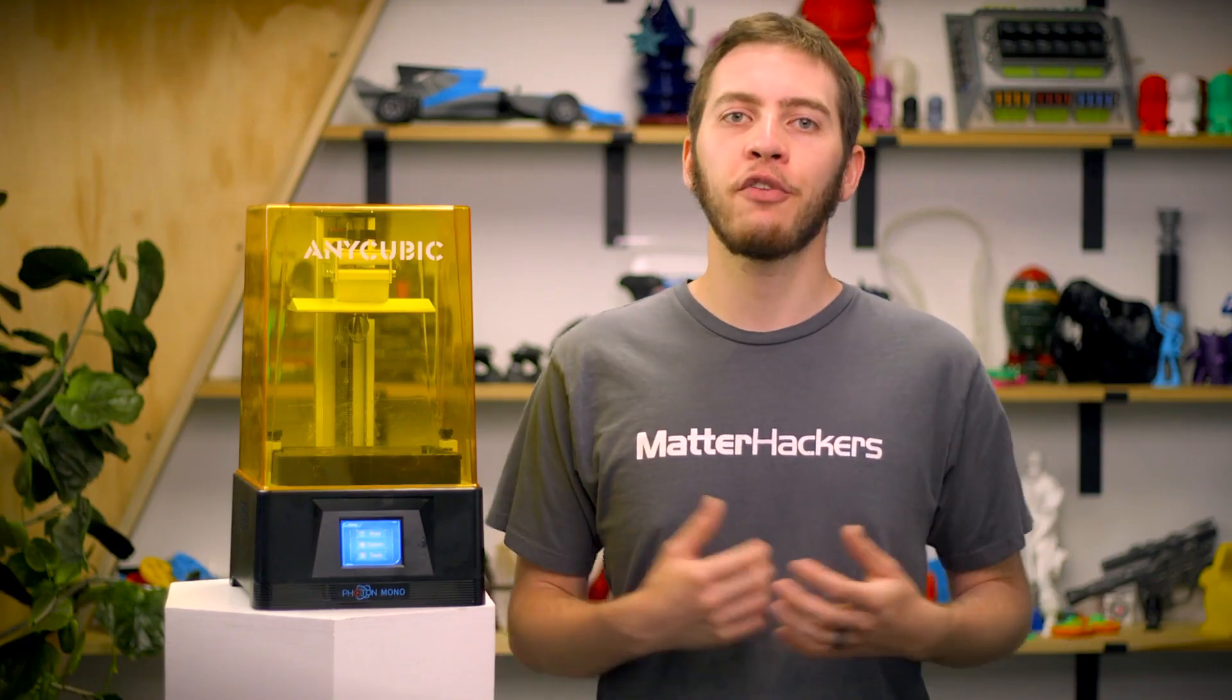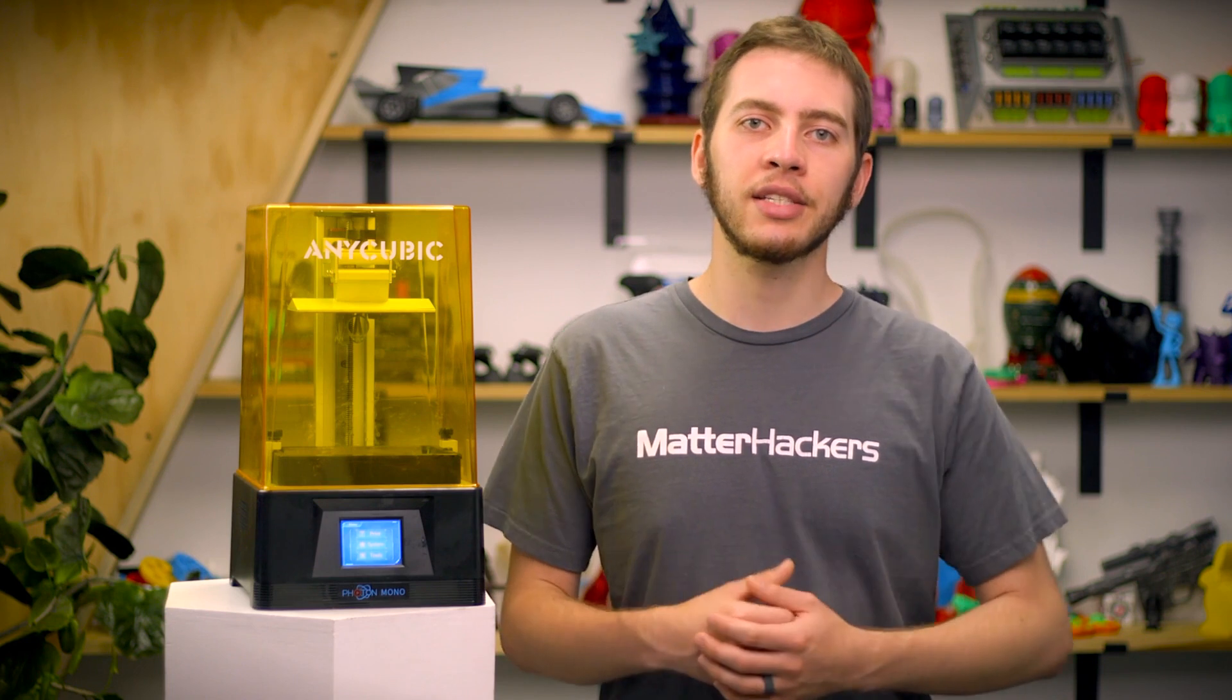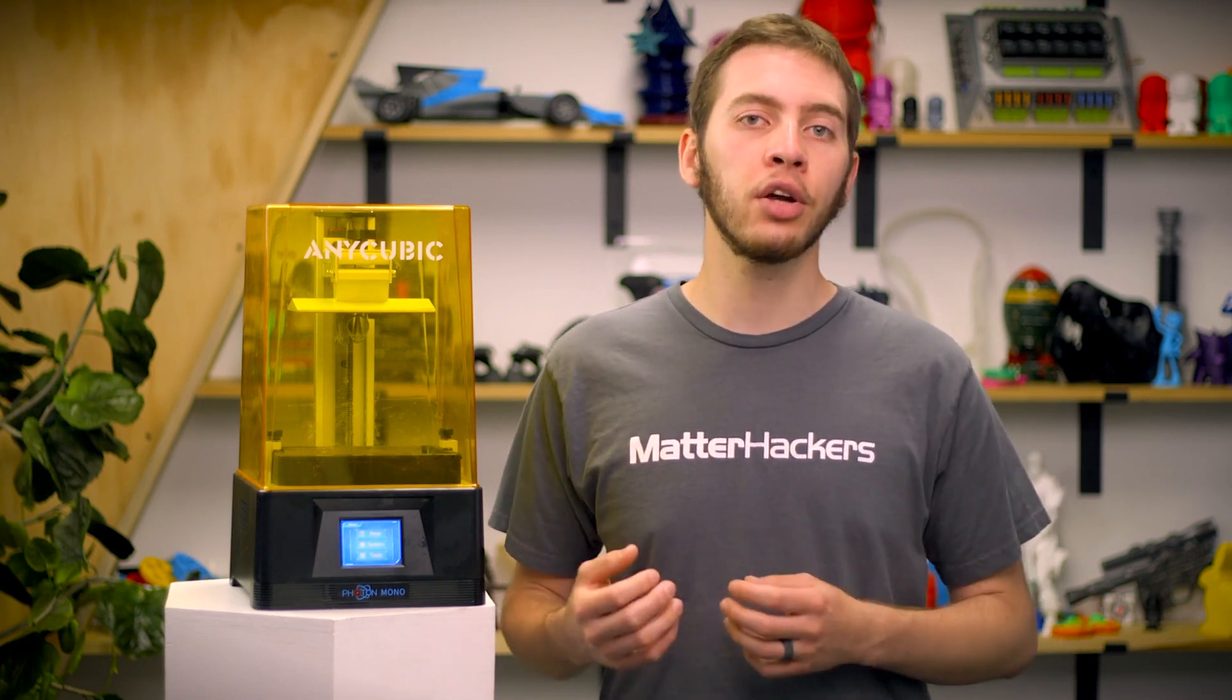The Anycubic Photon Mono follows in its predecessor's footsteps and uses MSLA technology, masked stereolithography apparatus, to harden liquid resin into unique shapes, full layers at a time.